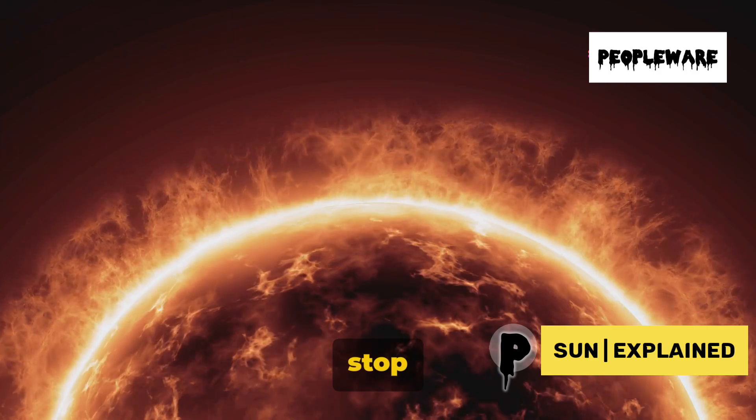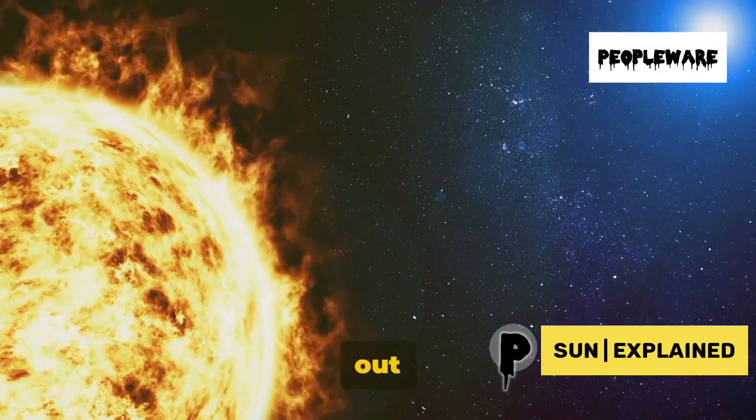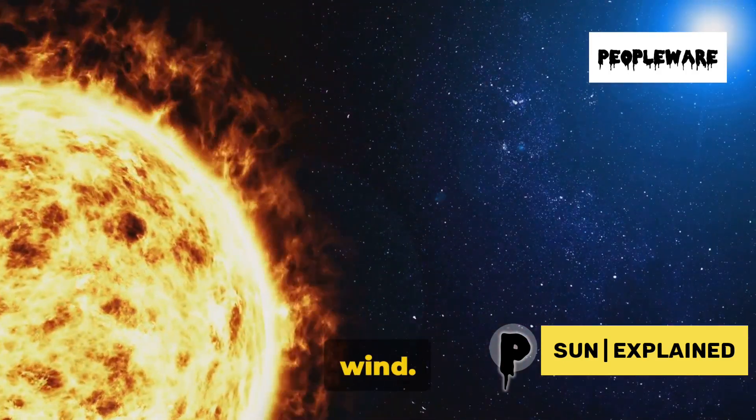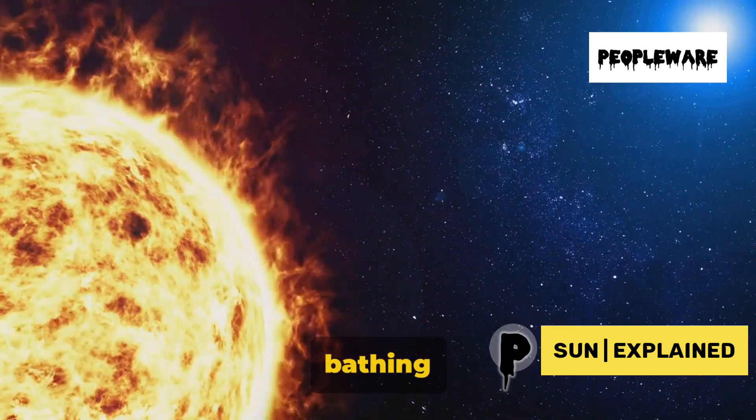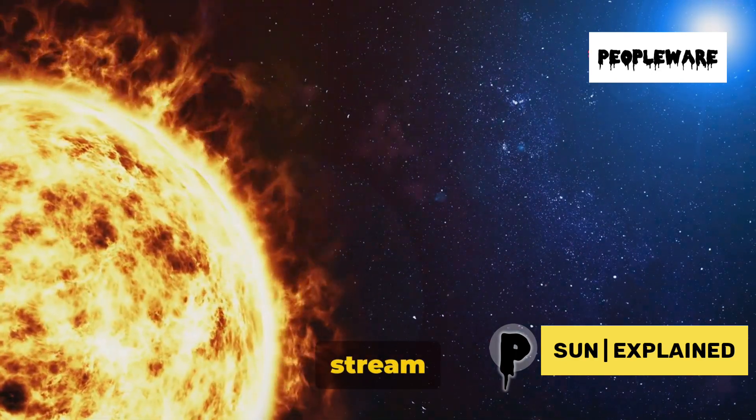But the Sun doesn't stop there. It constantly spews out a stream of particles known as the solar wind. This solar wind travels at a speed of a million miles per hour, bathing the solar system in a constant stream of particles.